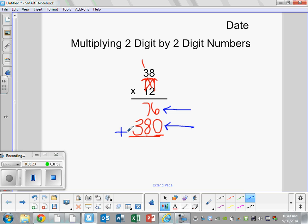To get our total product we are going to add these two numbers. So 6 plus 0 is 6. 7 plus 8 is 15. 3 plus 1 is 4. So the answer to our multiplication problem is 456.